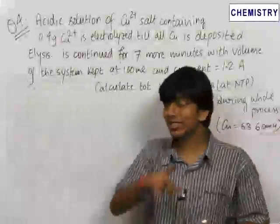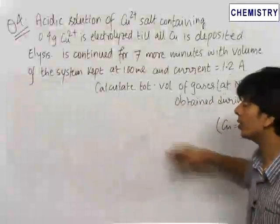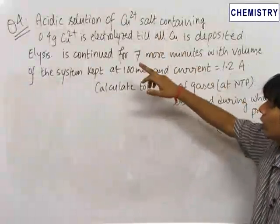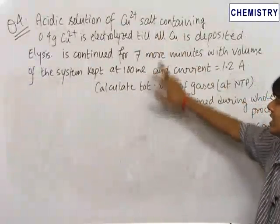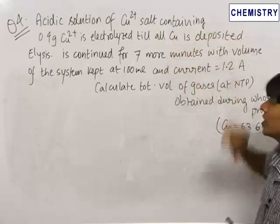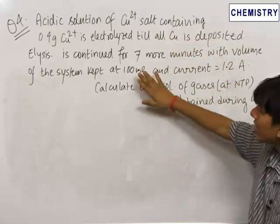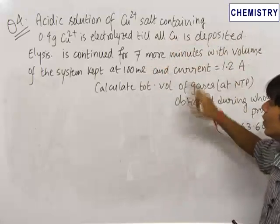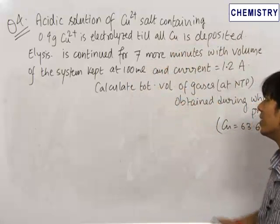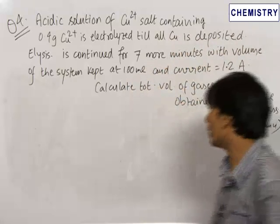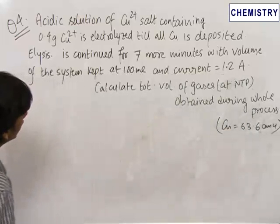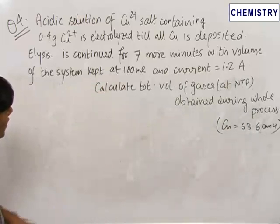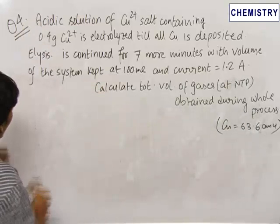The fourth question is a pretty interesting and very important problem. We have an acidic solution of CuSO4 containing 0.4 grams of Cu2+ ions, which is electrolyzed till all the copper is deposited. Electrolysis is then continued for 7 more minutes, with the volume of the system kept constant at 100 ml and current equal to 1.2 amperes. We need to find the total volume of gases at NTP obtained during the whole process.